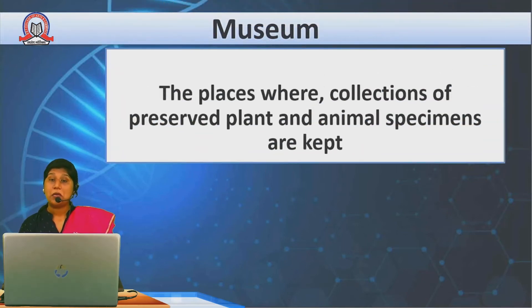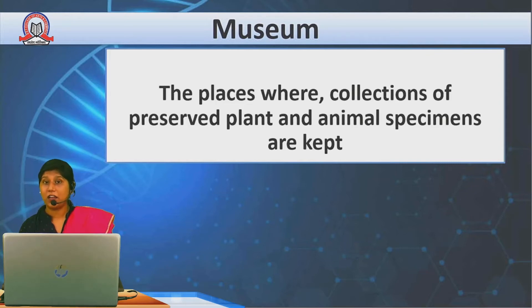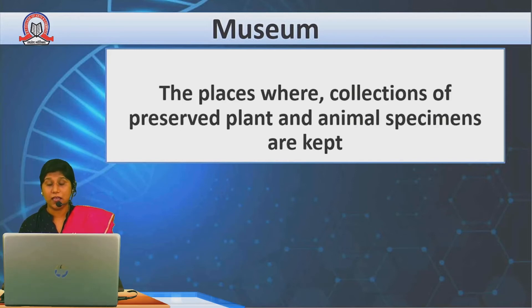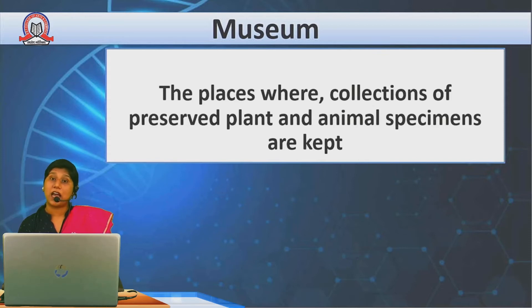Museums are the places where collections of preserved plants and animal specimens are kept. Preserved plants — remember from the last lecture, the herbarium is where we preserve plants by dry preservation. Similarly, in museums, preserved plants and animal specimens are kept. This is the definition of museum.